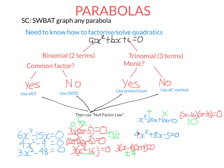Now here I have three terms, so it's a trinomial, but it's not monic because the number in front of x-squared is not one. So we're going to factorise using the AC method. It's called the AC method because we take this number A and this number C and multiply them together. AC is negative 20.